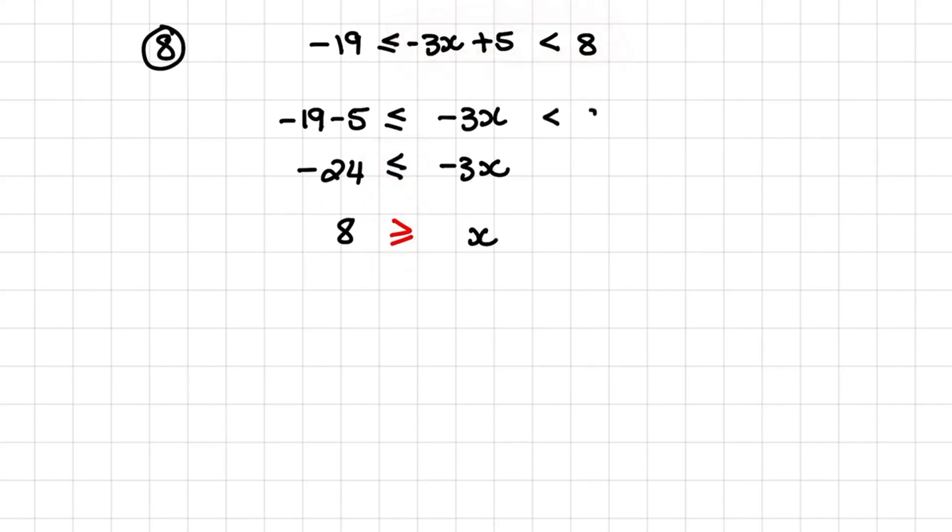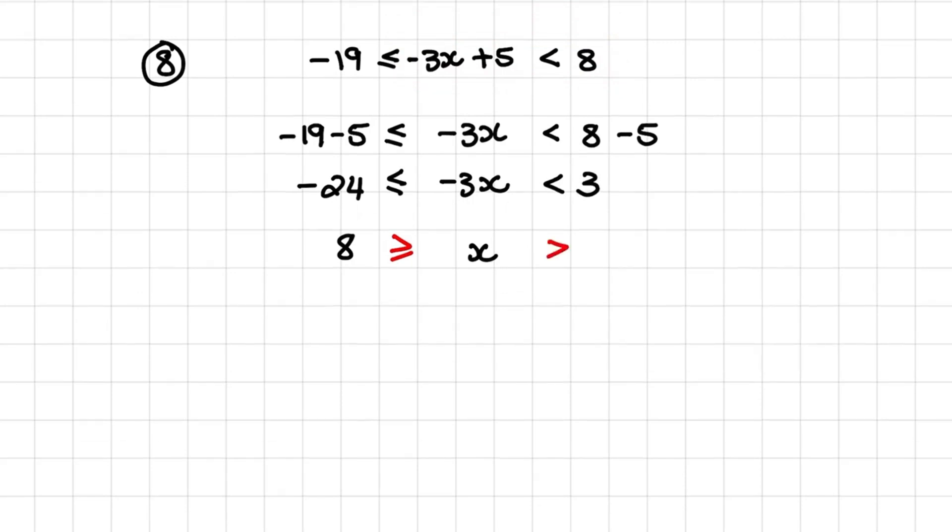So again, I move the 5 to the right and now it becomes 8 minus 5, and that is equal to 3. And then I divide both sides by negative 3. So x would be bigger than 1.